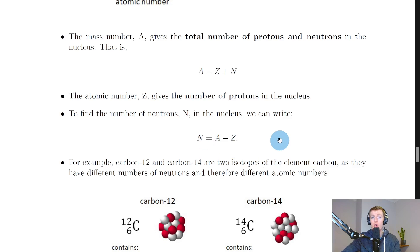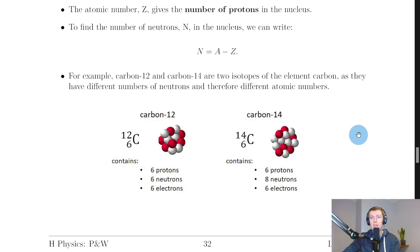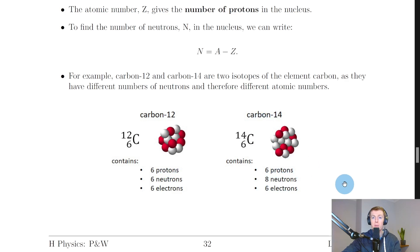Looking at our example: carbon-12 and carbon-14 are two isotopes of the element carbon as they have different numbers of neutrons and therefore different mass numbers. Atoms of the same element like carbon have the same number of protons, so carbon-12 contains six protons and carbon-14 also contains six protons.